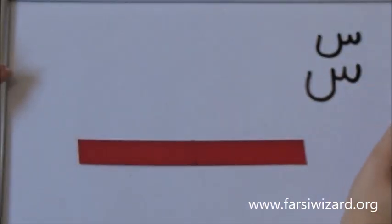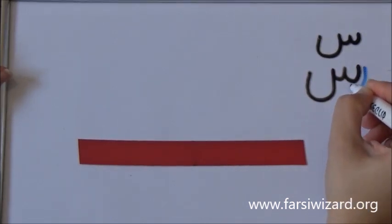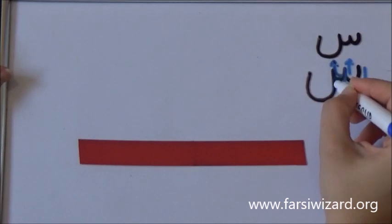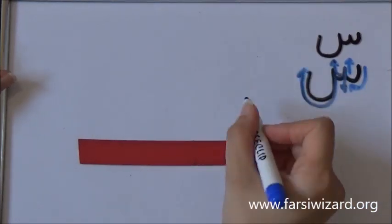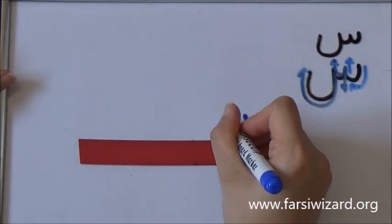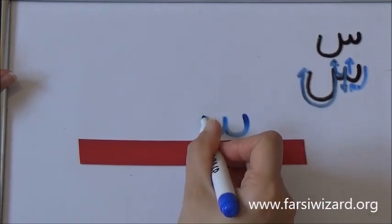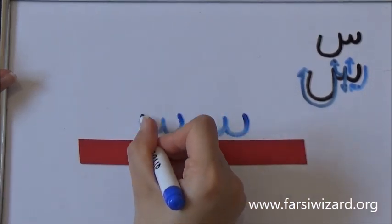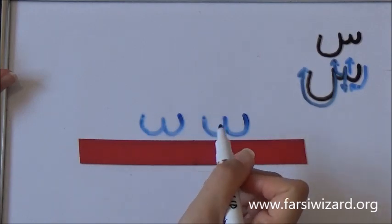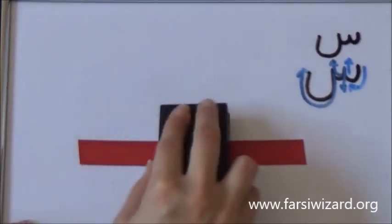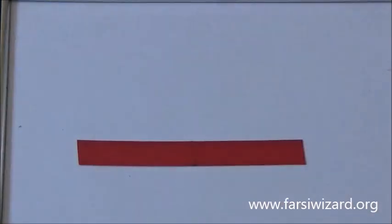This is how you will write the letter sin. Pay attention that there are three strokes above the line and then one belly. And this is how your pen has to move. If you remember that it has three strokes, it will be easy for you to remember how to write it.